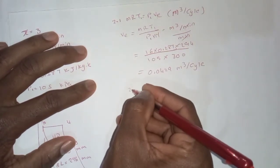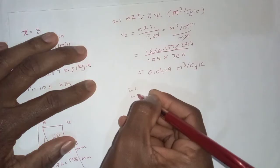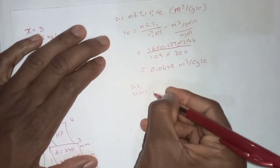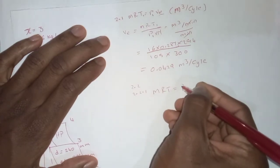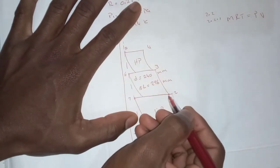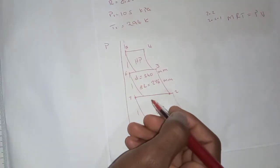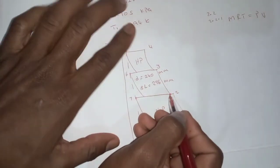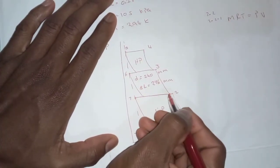Now we go to question 2.2 — everything we calculate is for the intermediate cylinder. For 2.2.1, the volume of air drawn in, in cubic meters per cycle correct to four decimal places, we use MRT equals PV again. Since we are looking for the volume of air drawn into the intermediate cylinder, the temperature of the air drawn in is the temperature after the intercooler.